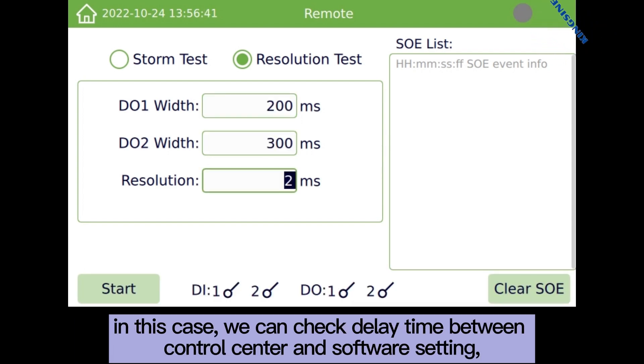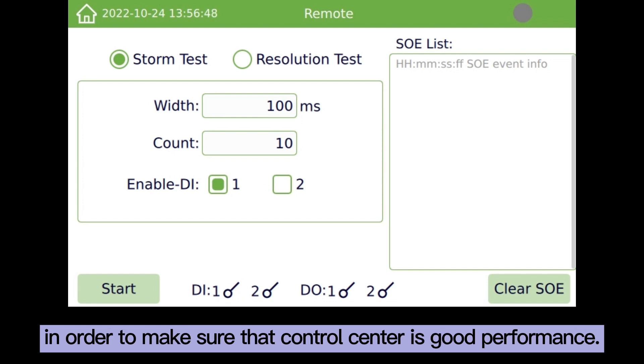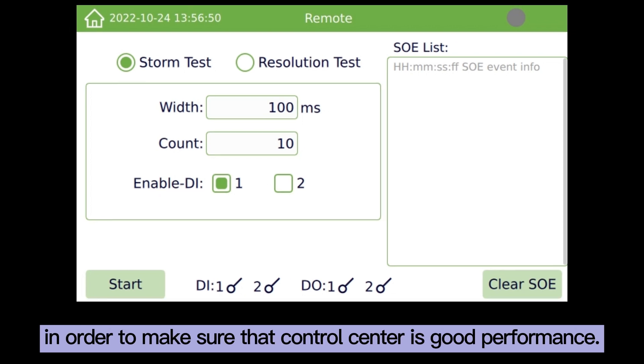In this case, we can check delay time between control center and software setting. We also can define the interval time of each remote signal, in order to make sure that control center is good performance.